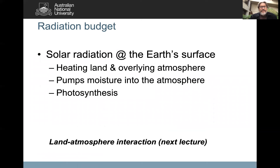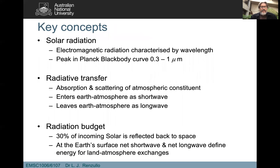Solar radiation at the Earth's surface heats the underlying land and the overlying atmosphere. That heating of the land surface pumps moisture into the atmosphere, and the shortwave radiation also drives photosynthesis — plants open their stomata to take in CO₂, and solar radiation converts CO₂ into the starches and sugars that plants need. The whole study of land-atmosphere interactions is an active and critical field for understanding the Earth system, and we'll introduce it further in our next lecture.